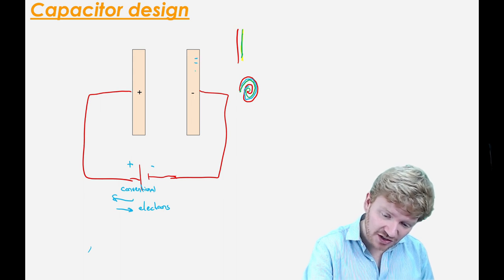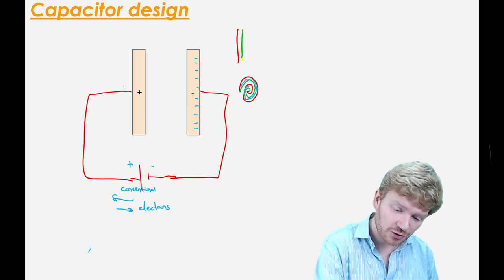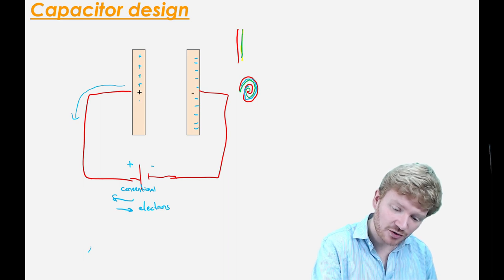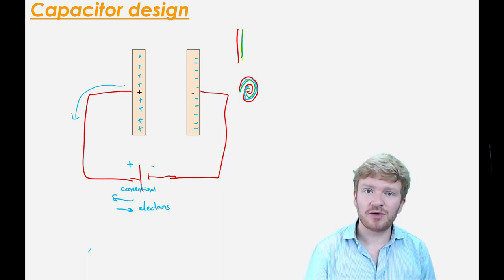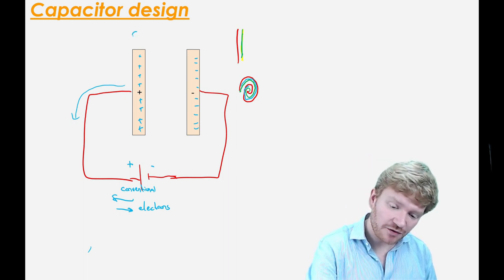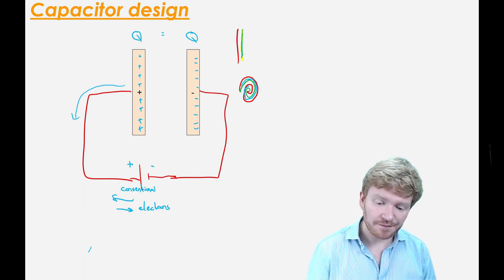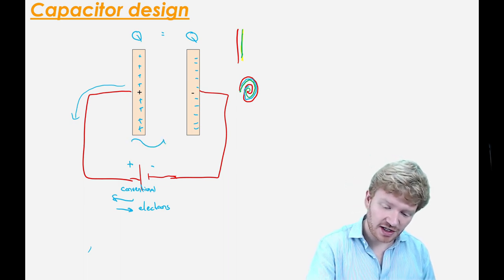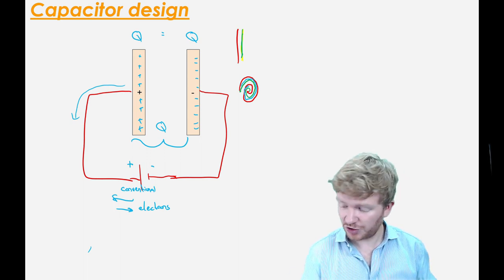What will happen is, if this plate is connected to the negative end, I will get a build-up of electrons on one side. Those electrons will have come from the other plate, so it will leave behind positive charge on the other plate. Whatever the charge is on one plate must be equal to the charge on the other plate. I summarise that by saying the whole capacitor is charged with charge Q.